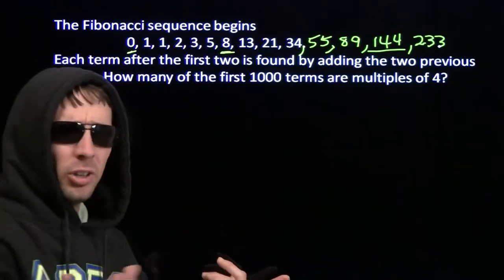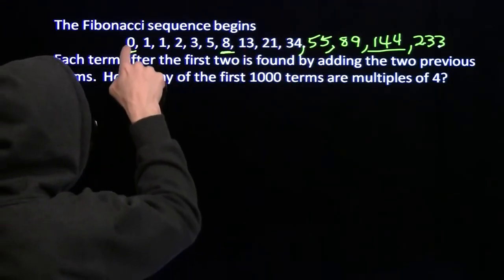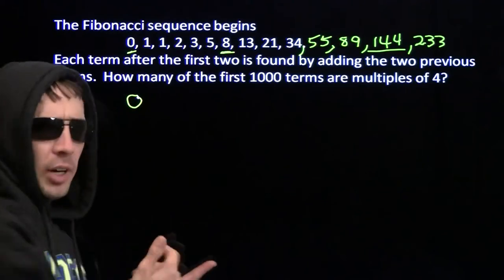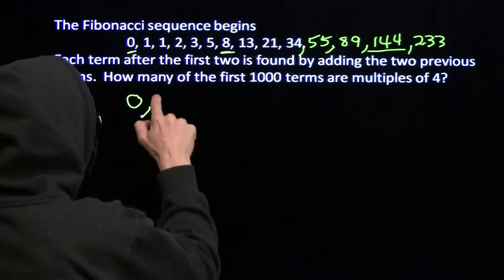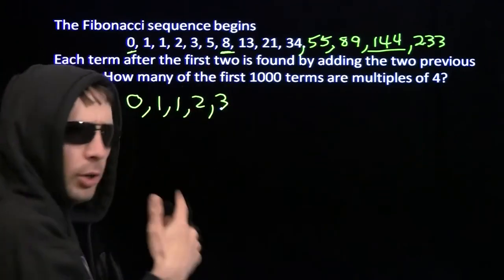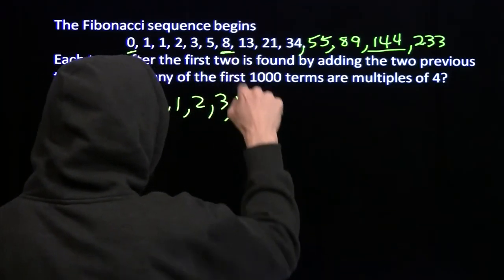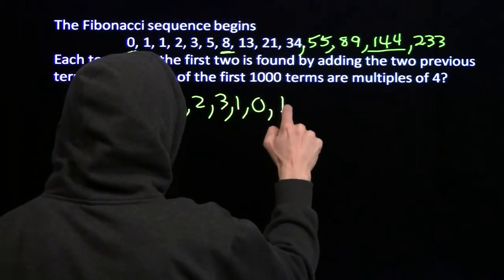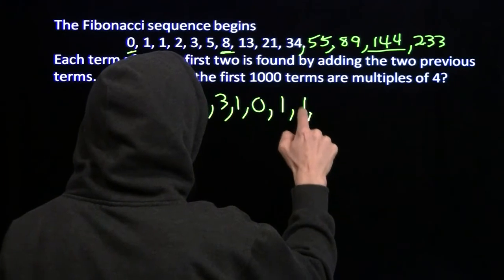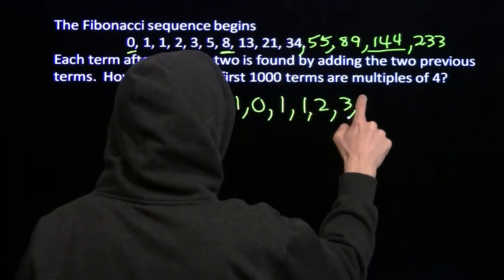How do I think about whether a number is a multiple of 4? Well, I divide 4 into it, and if the remainder is 0, I've got a multiple of 4. But let's just look at those remainders — we don't actually care what the numbers are. The first term divided by 4 has remainder 0. Then the remainders for the next terms: 1, 1, then 5 divided by 4 gives remainder 1, then 8 gives 0, 13 gives 1, 21 gives 1, 34 gives 2, then 3, then 1.